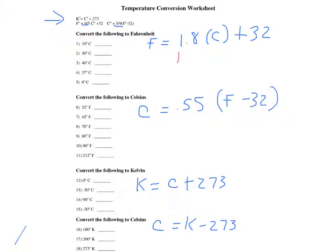On number one, we would have 1.8 times 10 plus 32 and we would do the math. On number six, we would take 0.55 times 32 minus 32, and we would get 0. On our next one, let's do 13. We have negative 50 plus 273, and we would have an answer of 223. On number 16, we would take 100 minus 273, and we would get negative 173. It is okay to get negative numbers with regards to temperature.